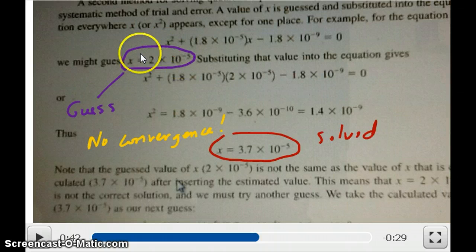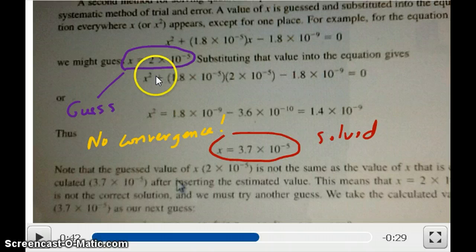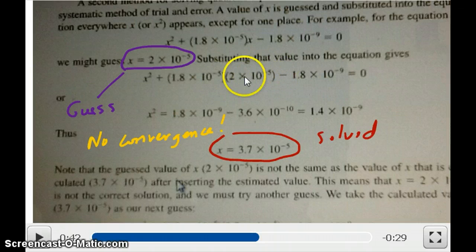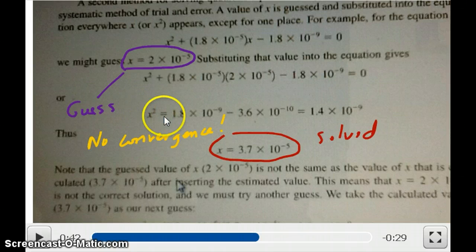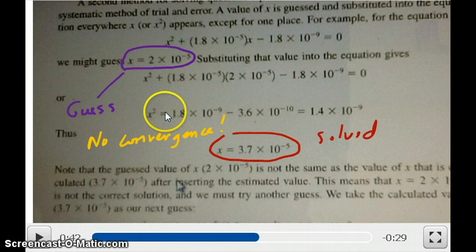What we did here was to take this value and substitute it back to the value of x, so you can see down that your equation becomes x squared plus 1.8 times 10 to the minus 5 times x, but x is now this number, so you put it right here, minus 1.8 times 10 to the minus 9 equals zero. And then what you do is go ahead and solve for what x would be, because you still have one that's unknown, so you're going to solve for that, and you find that x squared is equal to this, and so x is equal to this number right here circled in red.